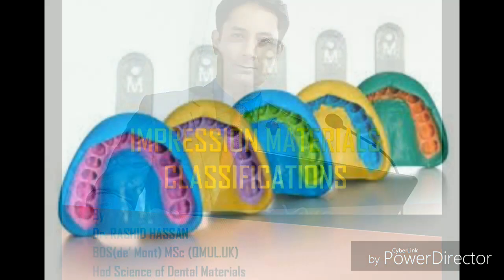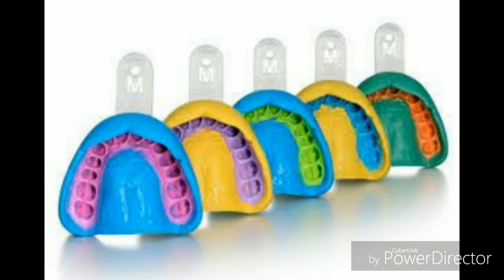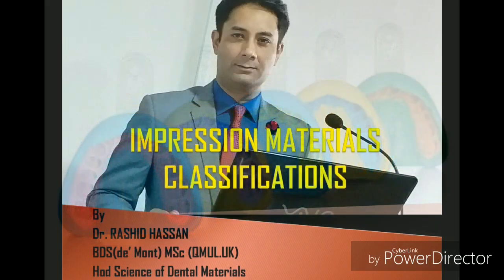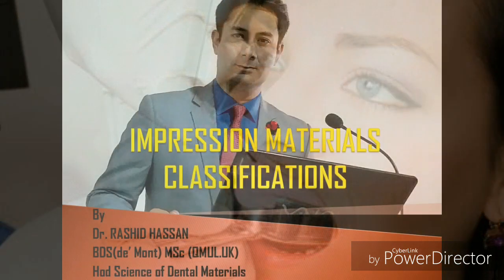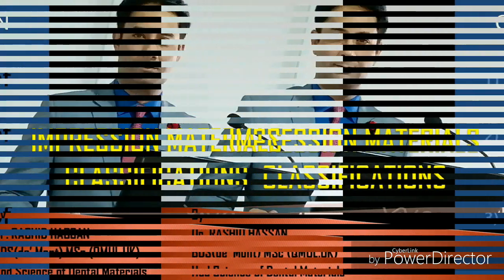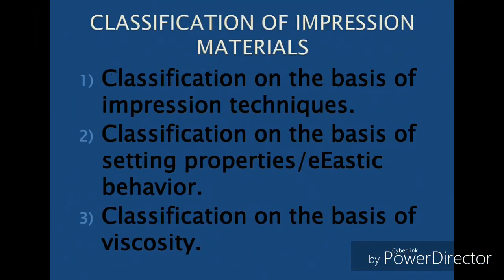An impression is a negative replica of the orodental structures, and the materials used to obtain the impression of the tooth structure and the surrounding oral tissues are called impression materials. This lecture describes three different ways of classifying impression materials: first, classification based upon impression techniques; second, classification based upon setting properties or elastic behavior; and third, classification based upon the viscosity of the impression material.